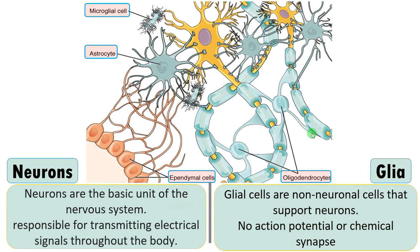Glial cells are non-neuronal cells that support neurons — like microglial cells, astrocytes, ependymal cells, and oligodendrocytes. All non-neuronal cells are called glial cells. There is no action potential in glial cells, but there is resting potential, and there is no chemical synapse in the case of glial cells.